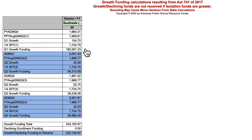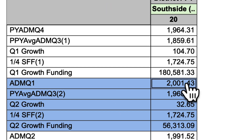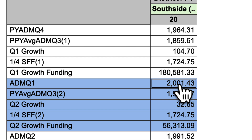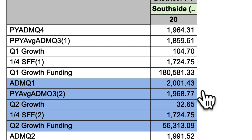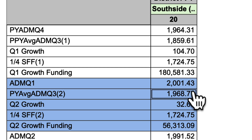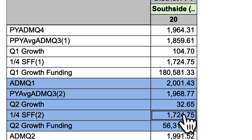So that comes out to about $180,000. The same process continues going forward. During the first quarter of fiscal year 20, the first quarter ADM is compared to the previous year's three-quarter ADM average — that's FY19. How do those numbers compare? 32 more students. We multiply that by one fourth of foundation funding, so the district receives $56,000.